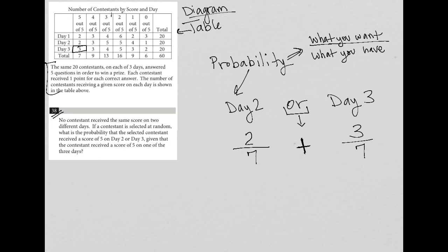So, that's it. That's the translation of this question. Here's our probability. So, keep this in mind here. Also, keep in mind that or means addition. 2 over 7 plus 3 over 7 is equal to 5 over 7. And that is the answer.